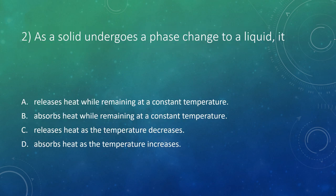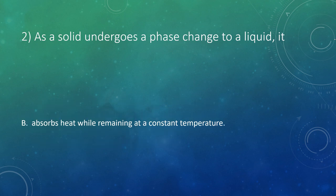Question two: as a solid undergoes a phase change to a liquid, what happens? Remember, when we change phases, the temperature does not change — it remains constant. We also need to determine whether we absorb or release heat. Going from a solid to a liquid, we need to absorb energy to break those molecules apart. So the answer is that temperature is constant while heat is absorbed.